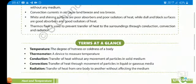Now we will see the terms at a glance. Temperature: the degree of hotness or coldness of a body. Thermometer: a device to measure temperature. Conduction: transfer of heat without any movement of particles in solid medium. Convection: transfer of heat through movement of particles in liquid or gaseous medium. This is again I am repeating the convection method, it is through the liquid or gaseous only. Radiation: transfer of heat from one body to another without affecting the medium.